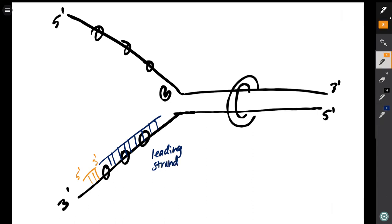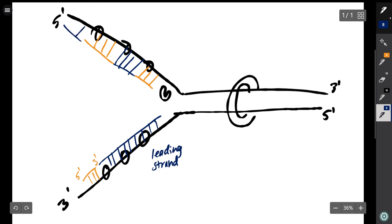The top strand is different because it is in the 5 prime to 3 prime direction, so RNA primase has to add in multiple RNA primers and DNA polymerase 3 will then come in and add the new synthesized DNA.